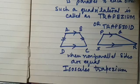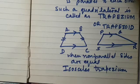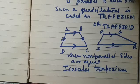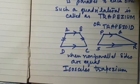In an isosceles triangle, two sides are equal. Similarly, in an isosceles trapezium, two non-parallel sides are equal and one pair of opposite sides is parallel to each other. I hope it is clear to you — you have now learned about trapezium.